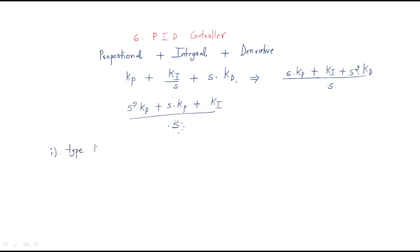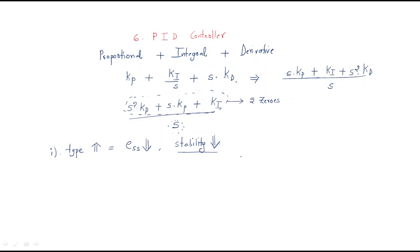Now observe the PID controller's effects. By adding the S in the denominator, the type increases, which means the steady state error decreases. However, stability also decreases. But notice that S² appears in the numerator, which means two zeros are available. One zero will be added to the system.